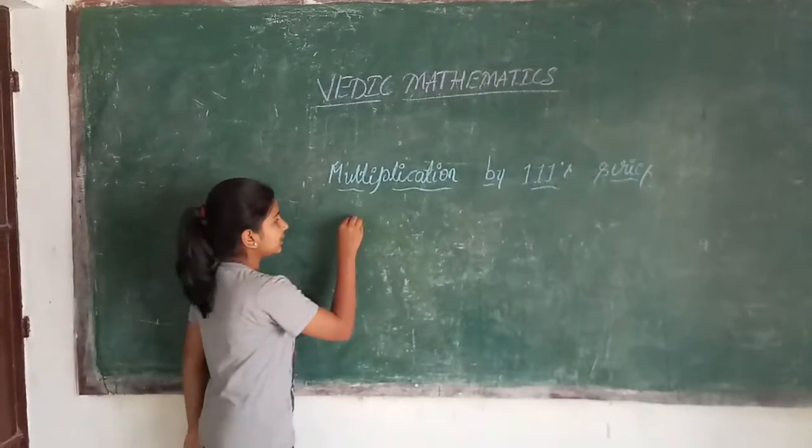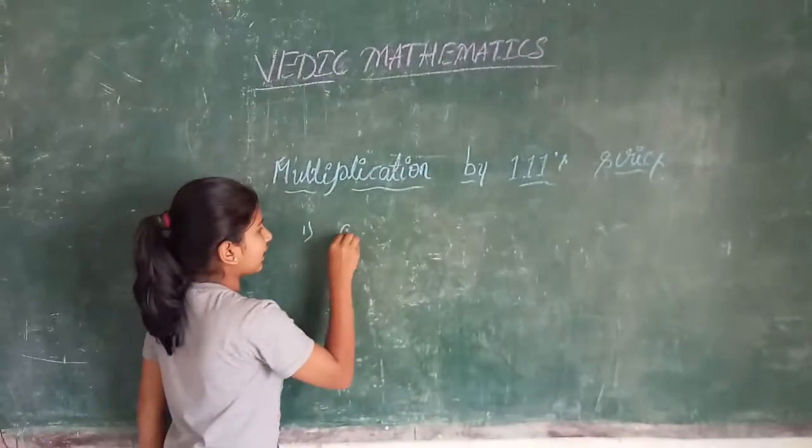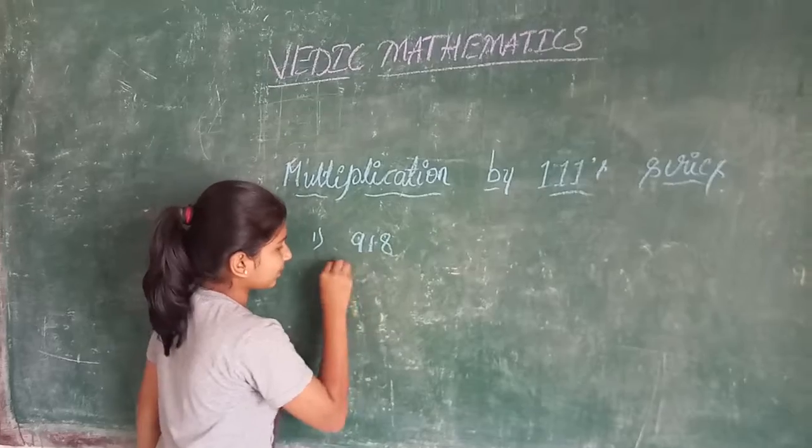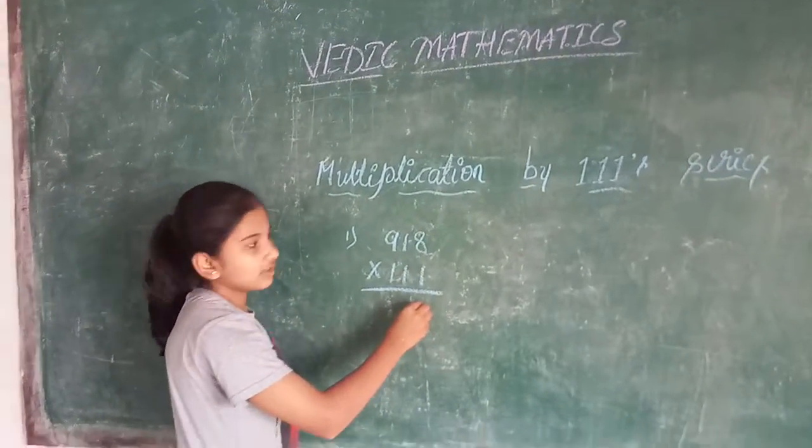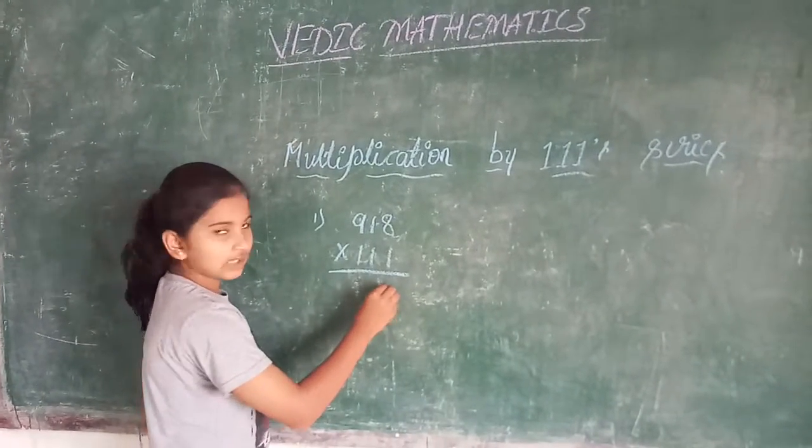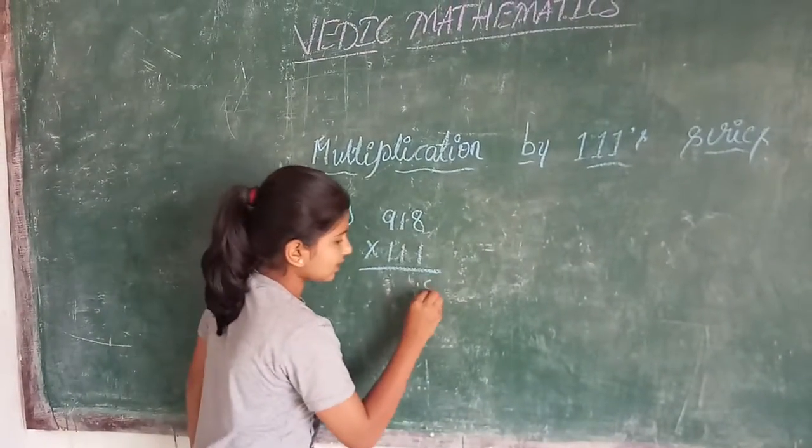Now I will take an example. First example is 918 into 111. Now to find the answer, we should write the last digit of the answer. So we should add 8 as it is.